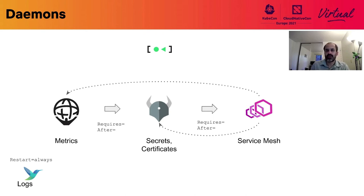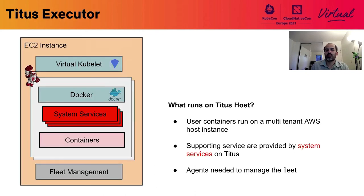We also control the shutdown sequence with systemd, so a node is taken out of service discovery and connections get drained before we shut it down. Here is what a Titus host instance is running. The virtual kubelet launches an instance of Titus executor per container, and because Titus is multi-tenant, containers in different AWS accounts with different security groups and IAM roles run on a shared instance.